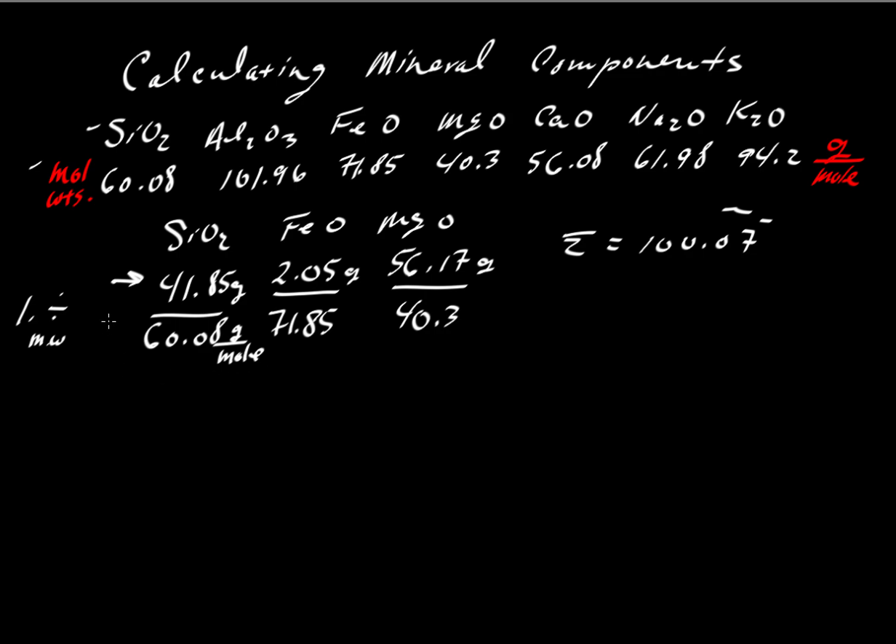So what we would get when we do this division here, this is equal to, I'm just going to give the results of these division problems here. We'll get 0.696 for silica, 0.0285 for iron, and 1.394 for magnesium.